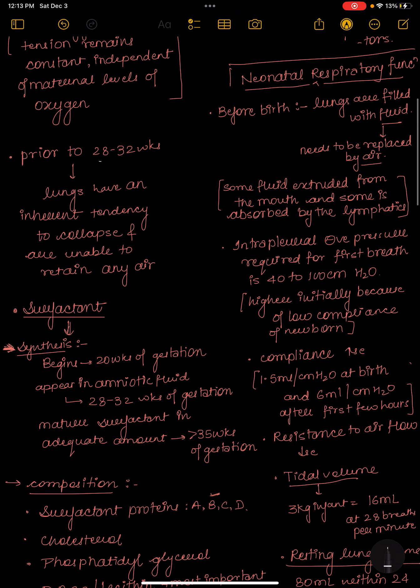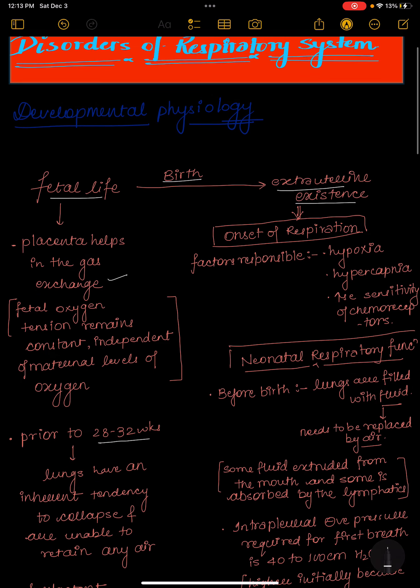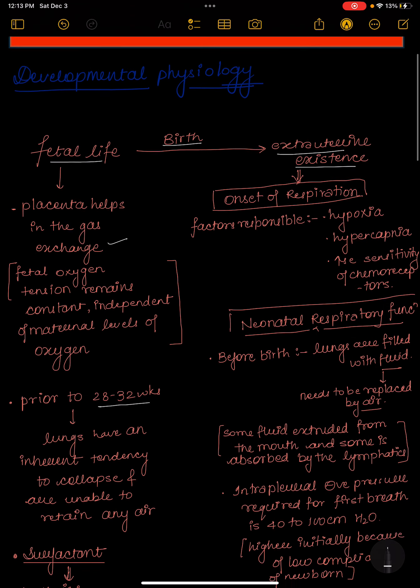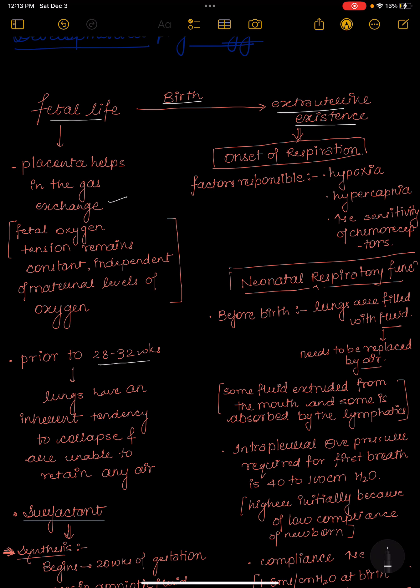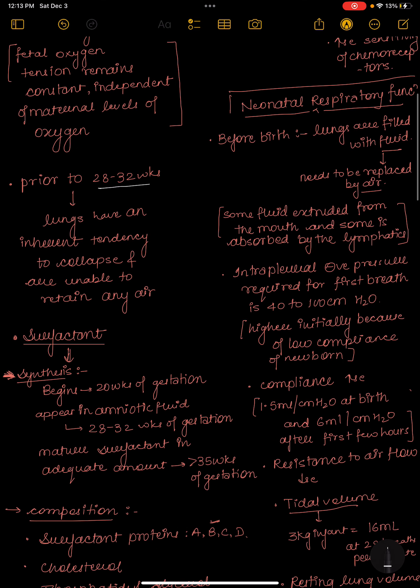Prior to 28 to 32 weeks, the lungs of an infant have an inherent tendency to collapse and are unable to retain any air. Before birth, in fetal life, placenta is responsible for gaseous exchange and the lungs are collapsed.